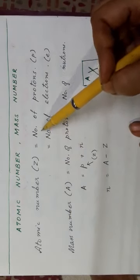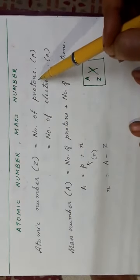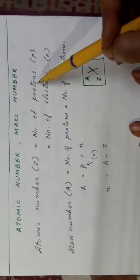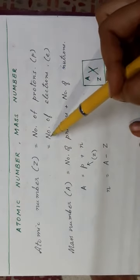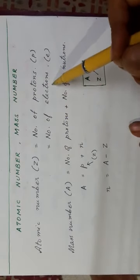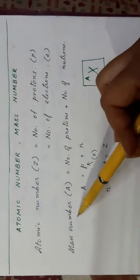This is equal to the number of protons that is in the nucleus. And as in a neutral atom, the number of protons is equal to the number of electrons. So atomic number here is also equal to the number of electrons. Now what is mass number?